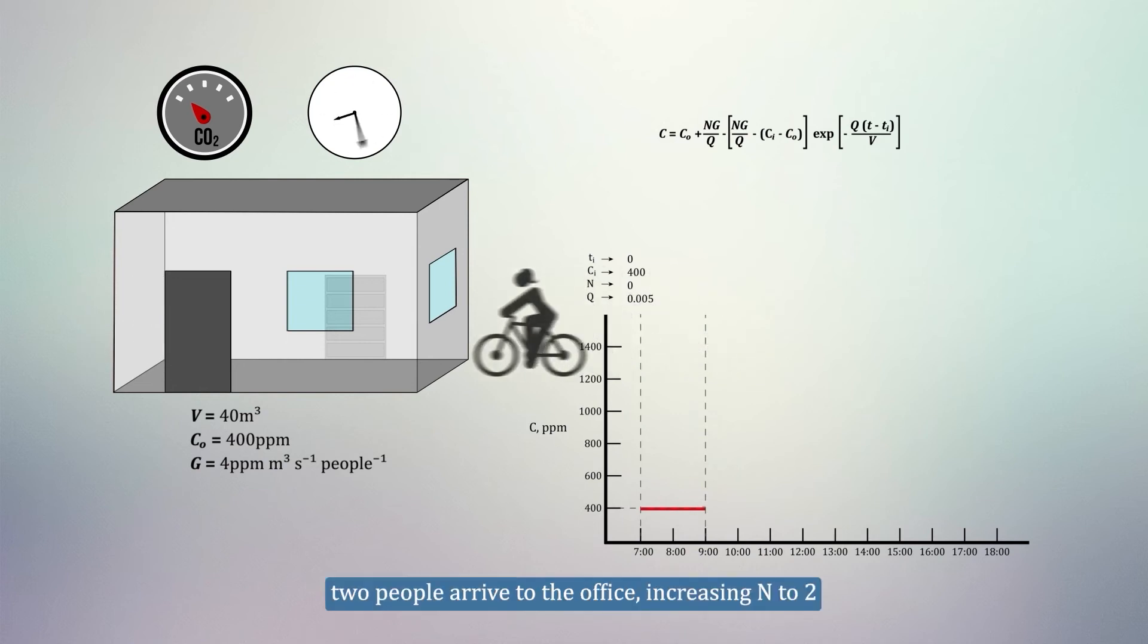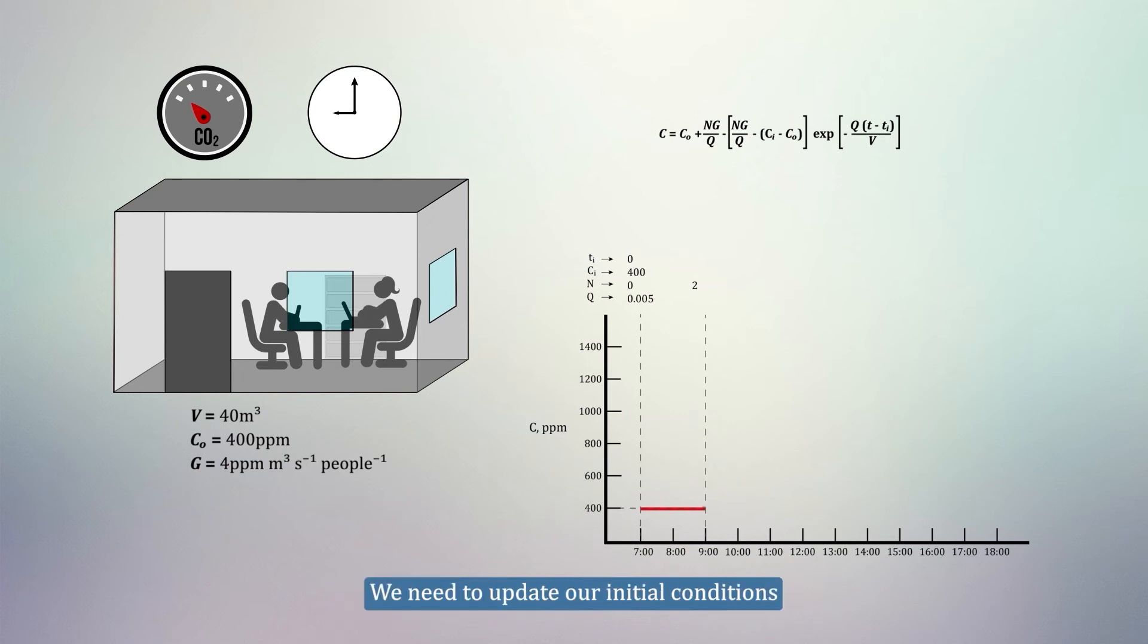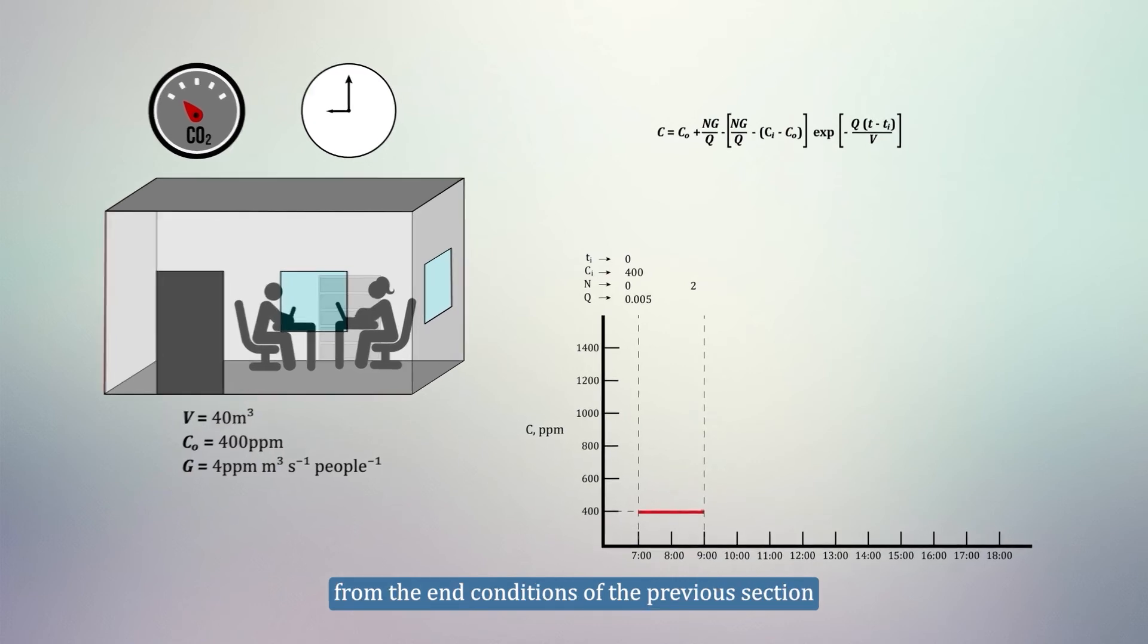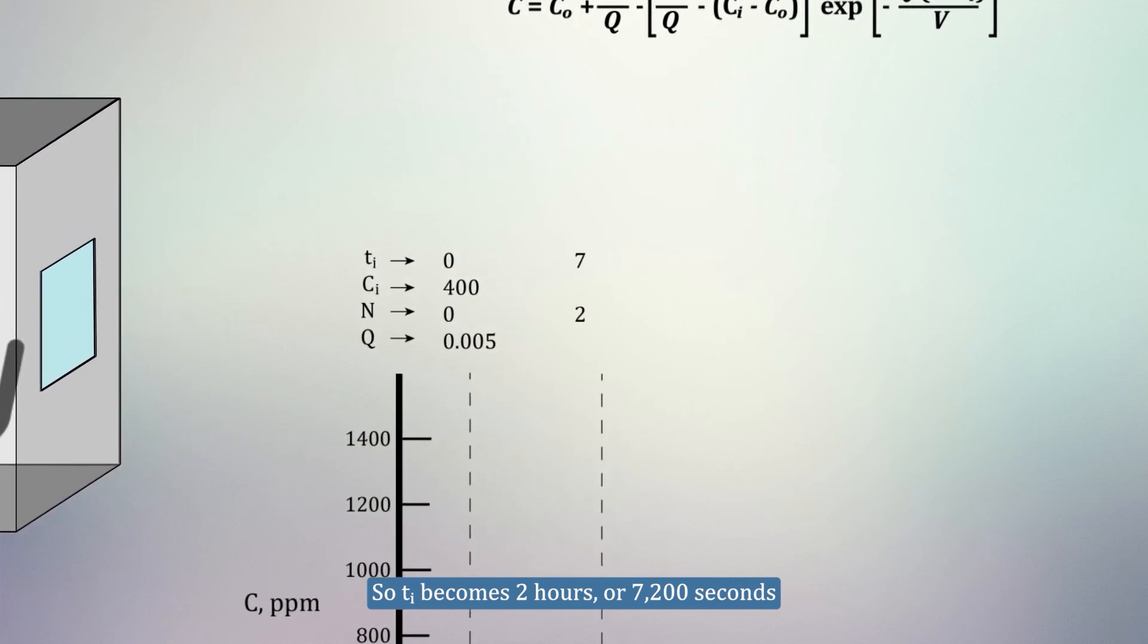Let's graph out the CO2 levels and move some variables down here to keep track of them as they change. Now, at 9am, two people arrive to the office, increasing N to 2. Because N has changed, we need to update our initial conditions, and we take the value of Ti and Ci from the end conditions of the previous section. So Ti becomes 2 hours, or 7200 seconds, and Ci is 400 ppm.